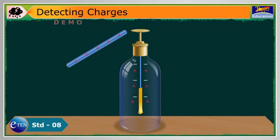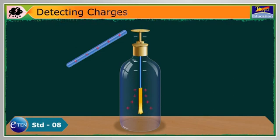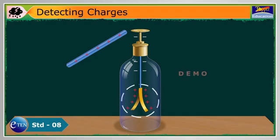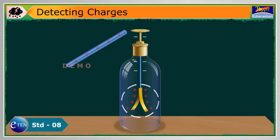Negative charges are attracted towards the positively charged glass rod and this negative charge gets concentrated to the metal disc. The leaves acquire positive charge because the glass rod repels the positive charge of the metal disc.